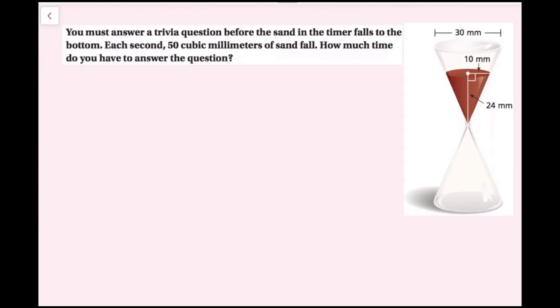For this example, you must answer a trivia question before the sand in the timer falls to the bottom. Each second, 50 cubic millimeters of sand fall. How much time do you have to answer the question? I need to figure out how much sand is in the cone, then divide that volume by 50 to find how many seconds will pass. My height is 24 millimeters and my radius is 10 millimeters. Volume equals 1/3 pi r squared h.